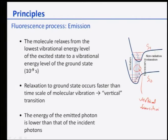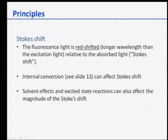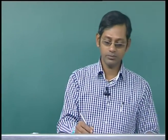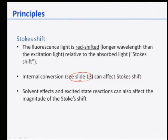The energy of the emitted photon is always lower than the incident photon because some energy is lost in the process. Fluorescence light is red-shifted — it comes at a longer wavelength than the excitation light. This is known as the Stokes shift. The emitted light has longer wavelength and lesser energy than the input, mainly because of the internal conversions that take place. Solvent effects and excited state reactions can also affect the Stokes shift.